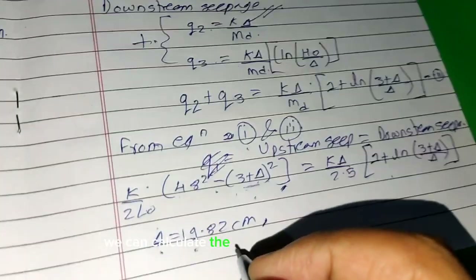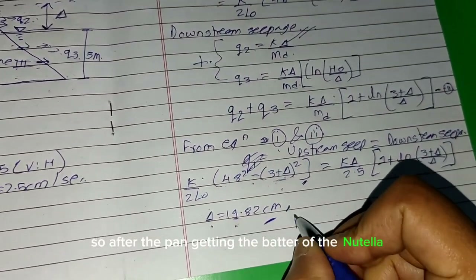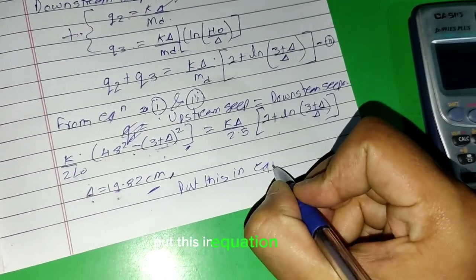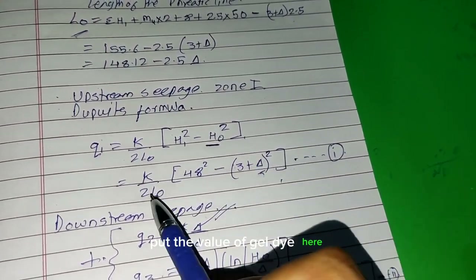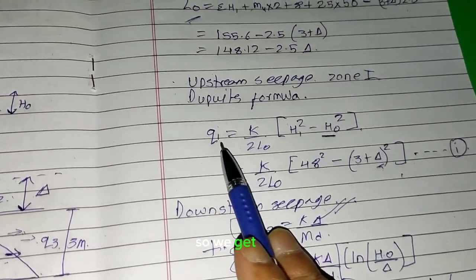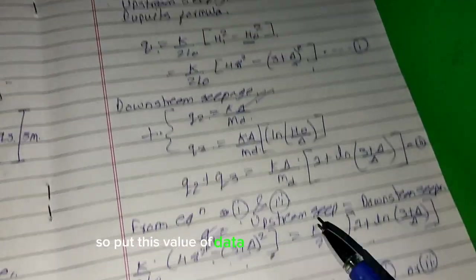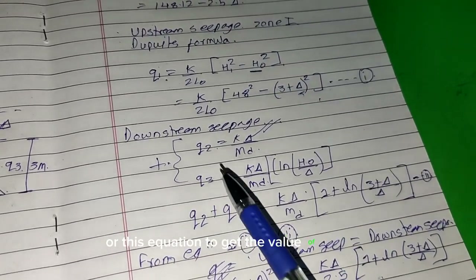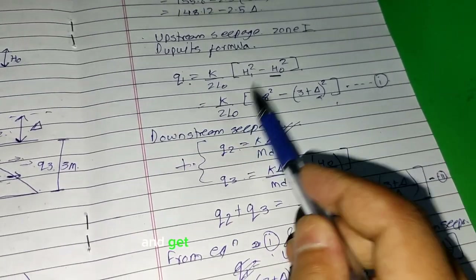After getting the value of delta, we can also calculate the length of the phreatic line. Put the value of delta into Equation 1 or Equation 2, along with the given value of k from the question, to get the seepage discharge. Since upstream discharge equals downstream discharge, you can use either equation to get the final discharge value.